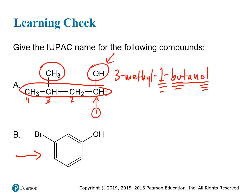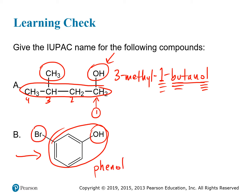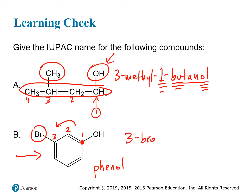For this next example, we have a hydroxyl group — but be careful not to accidentally call it cyclohexanol. This is a benzene ring with a hydroxyl attached, which means the whole thing is phenol, with a bromo substituent. We always count the carbon the OH group in phenol is attached to as the first carbon, then count the shortest distance: carbon two and carbon three. So it's 3-bromophenol — no number for the OH group, since we always assume it's on carbon one in phenol.